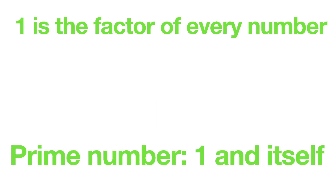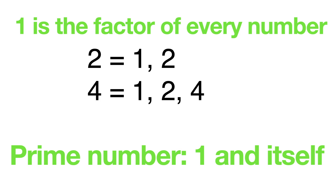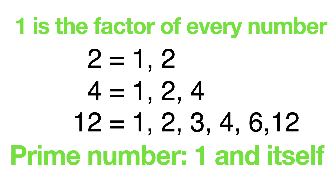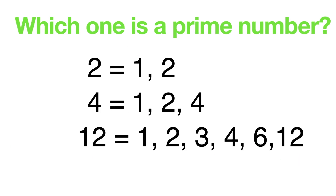One is a factor of every whole number. The factors of two are one and two. The factors of four are one, two, and four. The factors of twelve are one, two, three, four, six, and twelve. All numbers have one as a factor. Every number has at least two factors: one and itself. Prime numbers have only those two factors — itself and one.